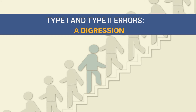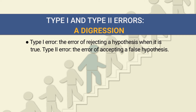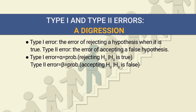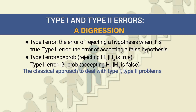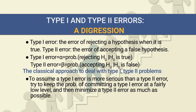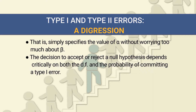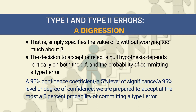Type I and Type II errors will be covered in forthcoming sessions, but here is a brief overview. A Type I error is the error of rejecting a hypothesis when it is true, denoted by alpha. A Type II error is the error of accepting a false hypothesis. The classical approach assumes Type I error is more serious than Type II, tries to keep the probability of Type I error fairly low, and then minimizes Type II error as much as possible.